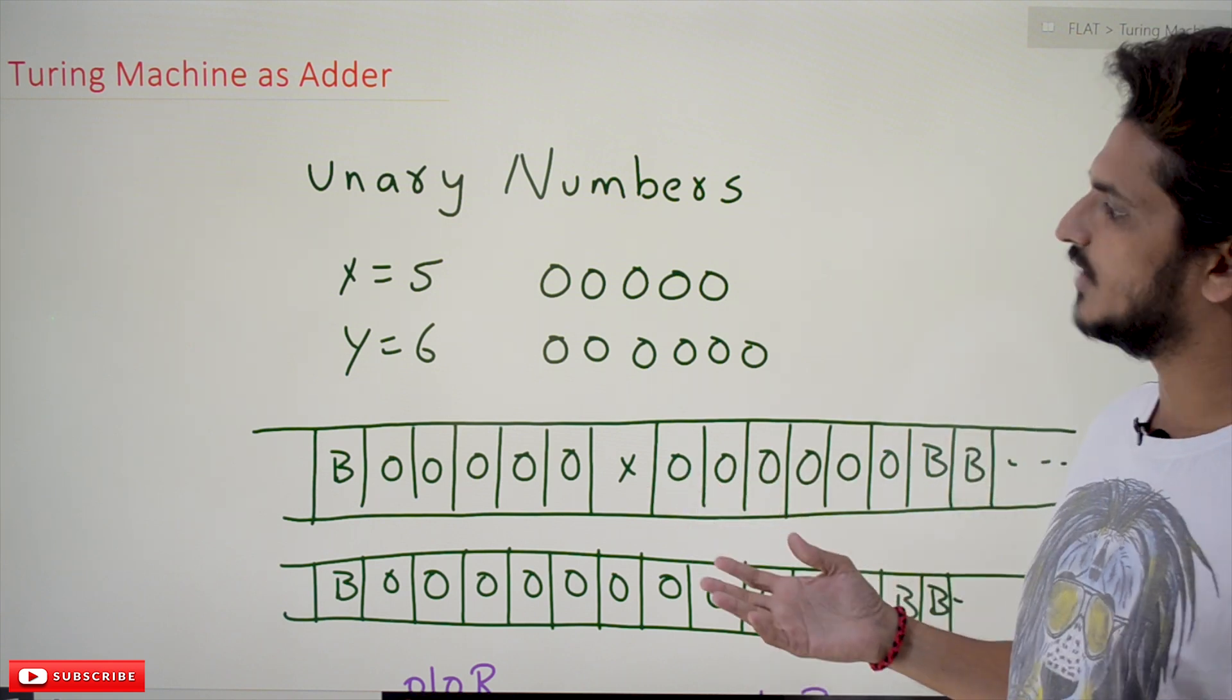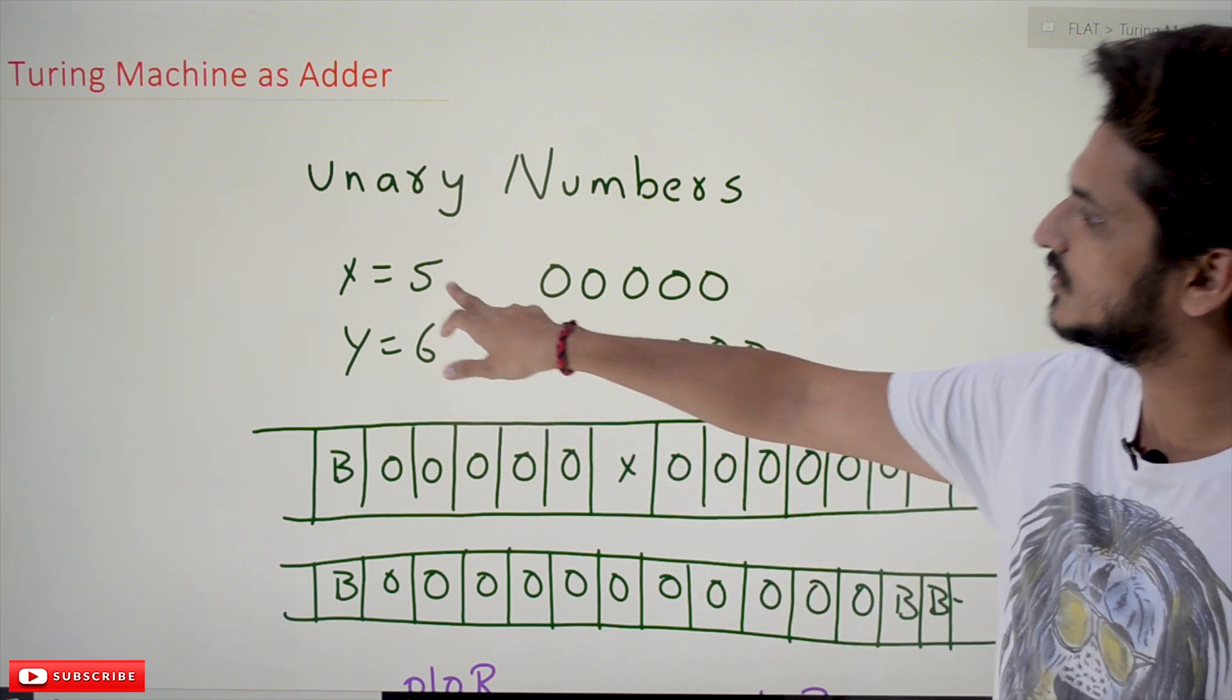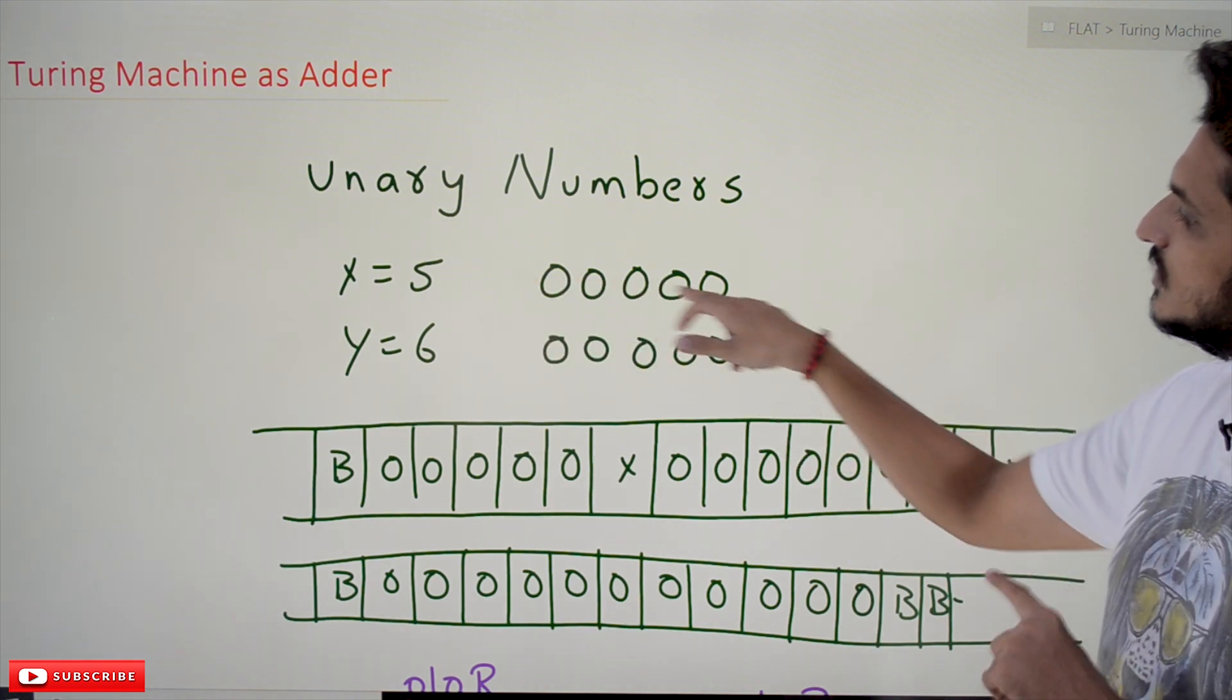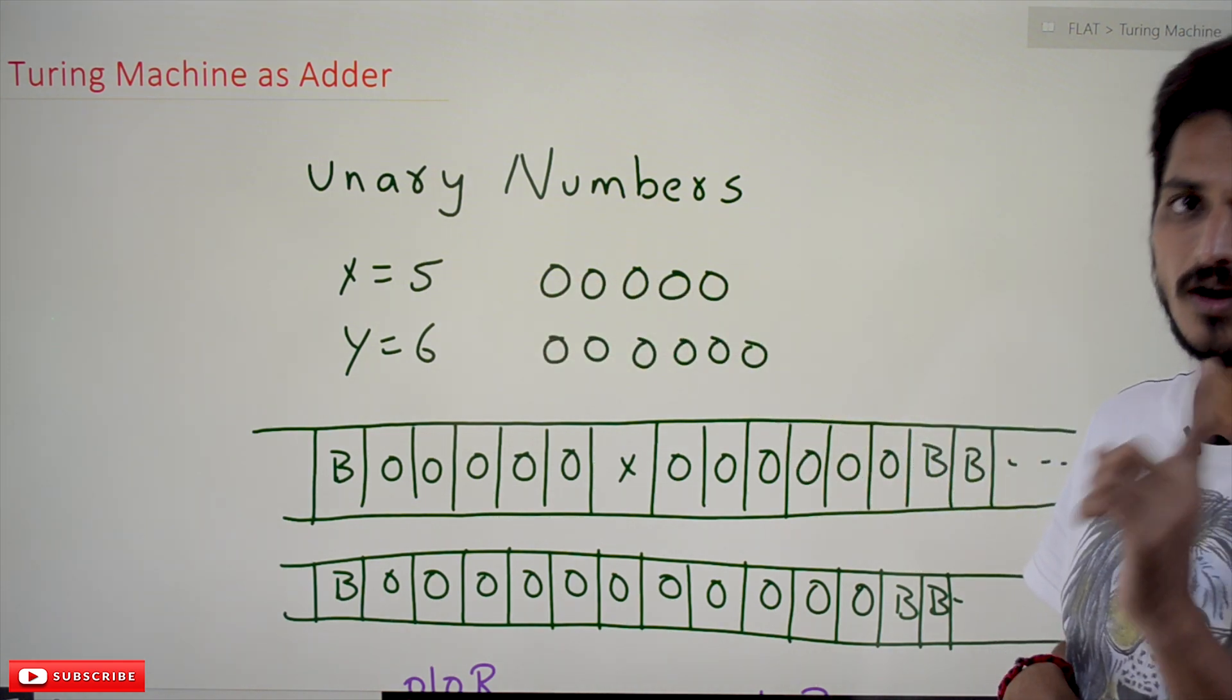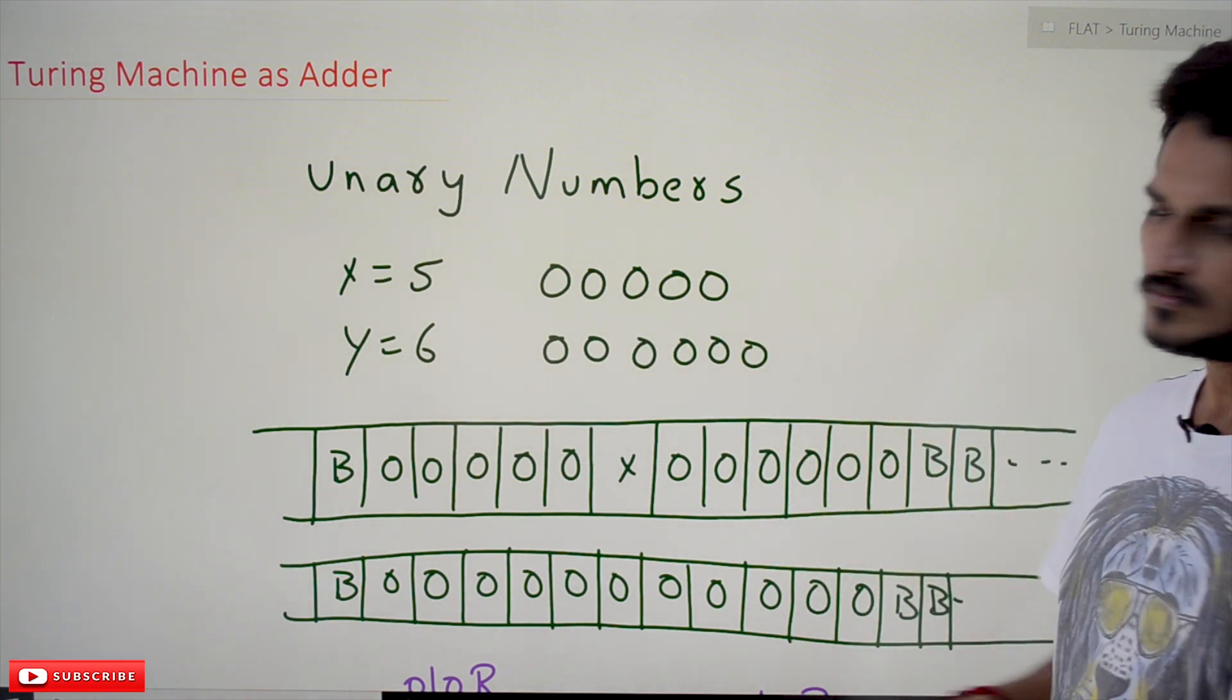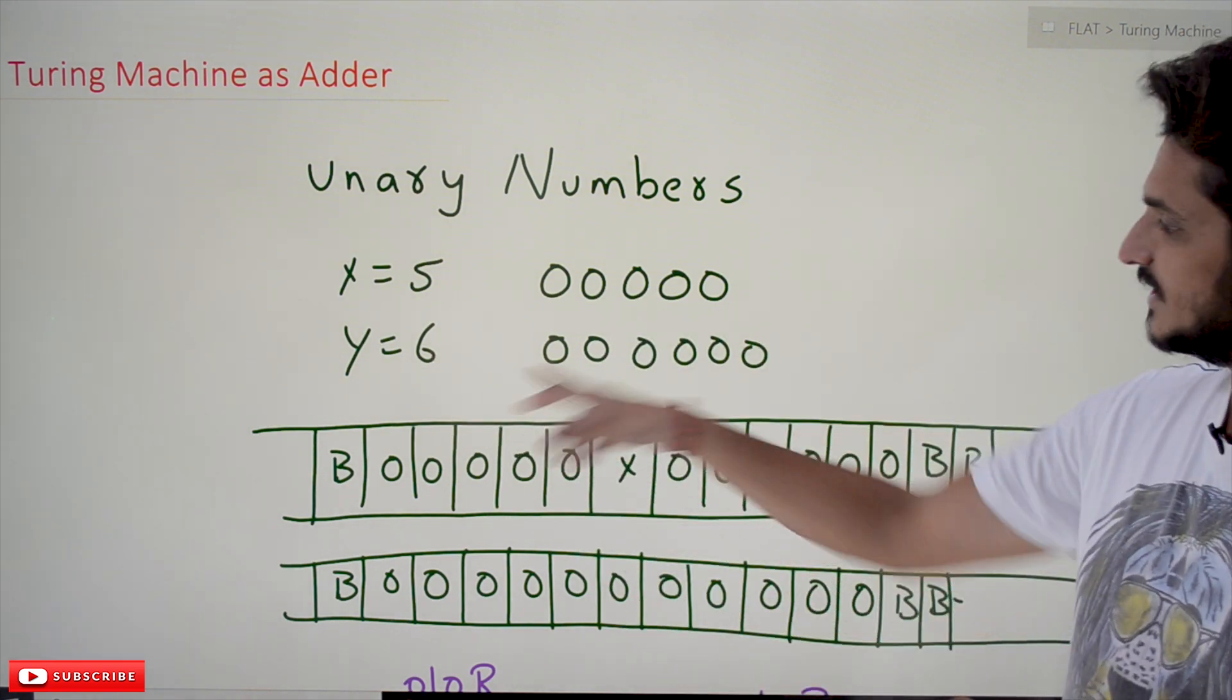x = 5 means 5 zeros are present in unary number system. Unary number system consists only of the digit 0. For y = 6, it means 6 zeros should be present.